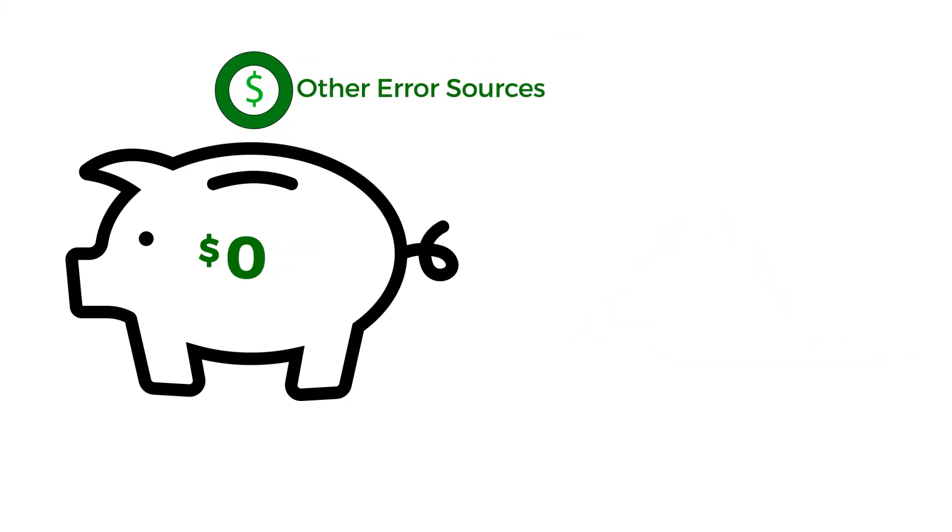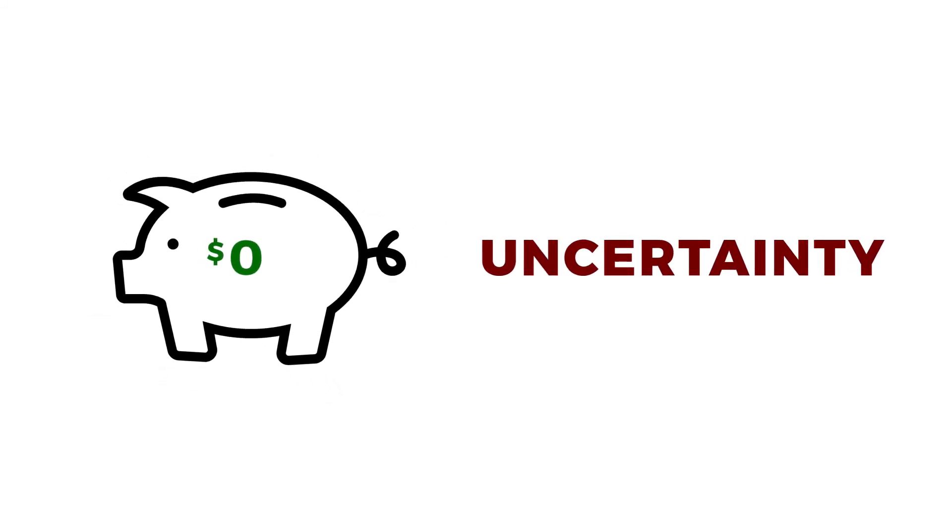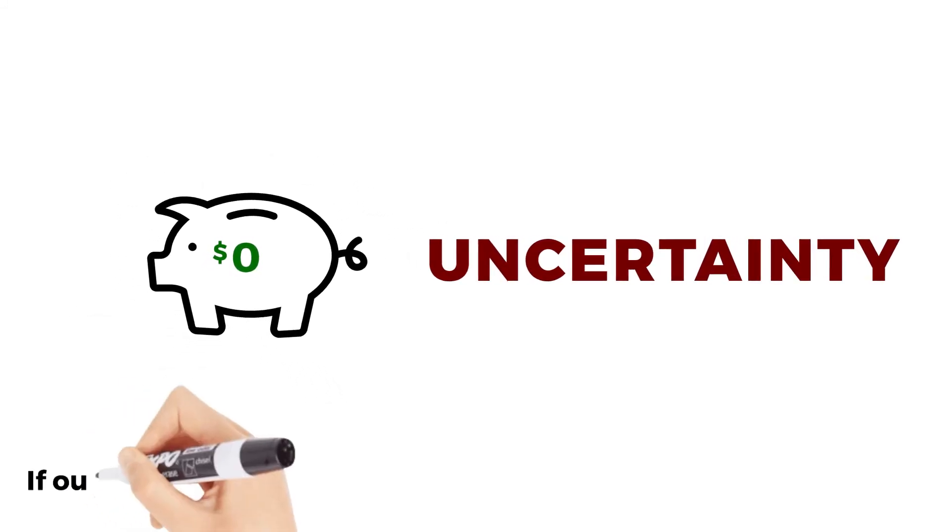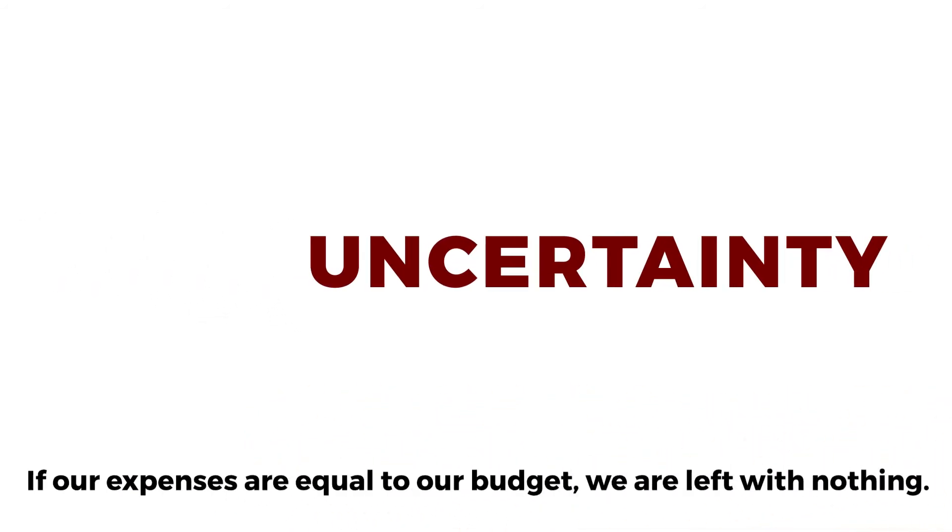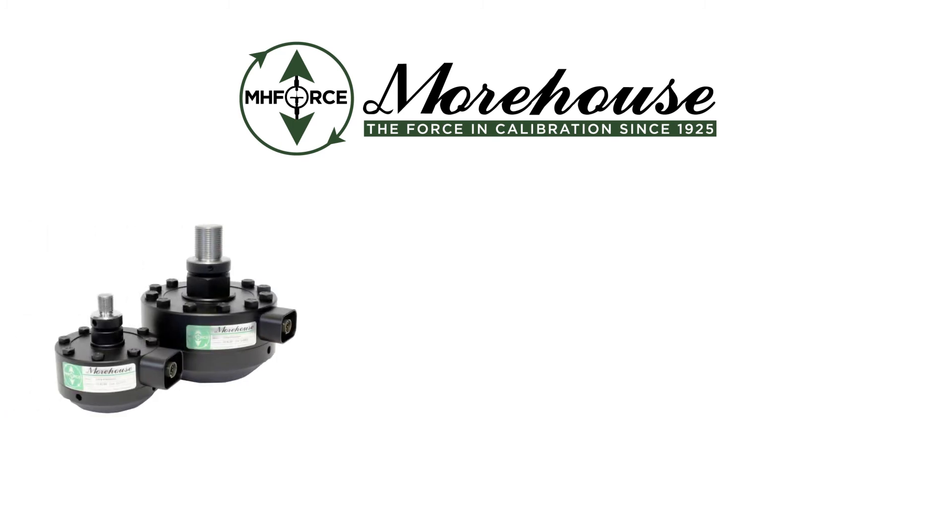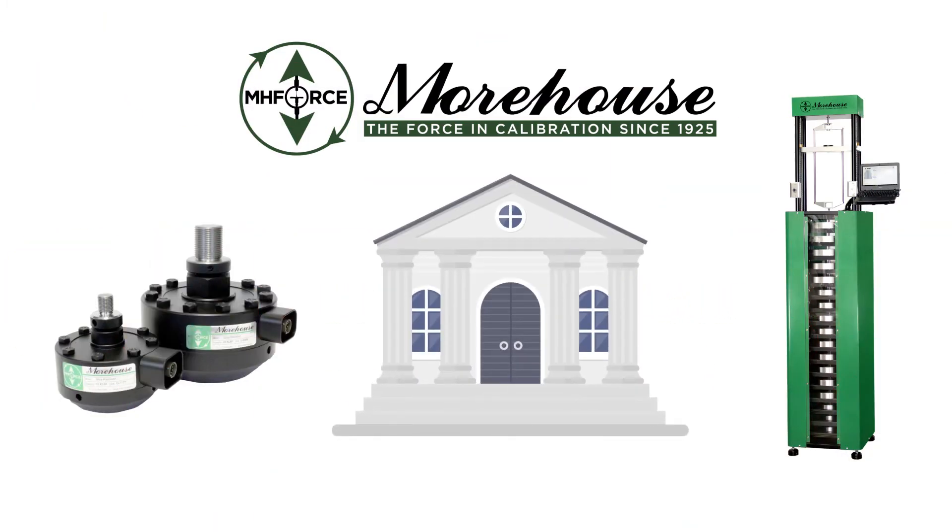Other error sources. The larger the contribution to, and sources of, uncertainty are, the less money we have. If our expenses are equal to our budget, we are left with nothing. A good calibration provider and the right equipment can reduce your uncertainties, leaving you with more money in the bank.